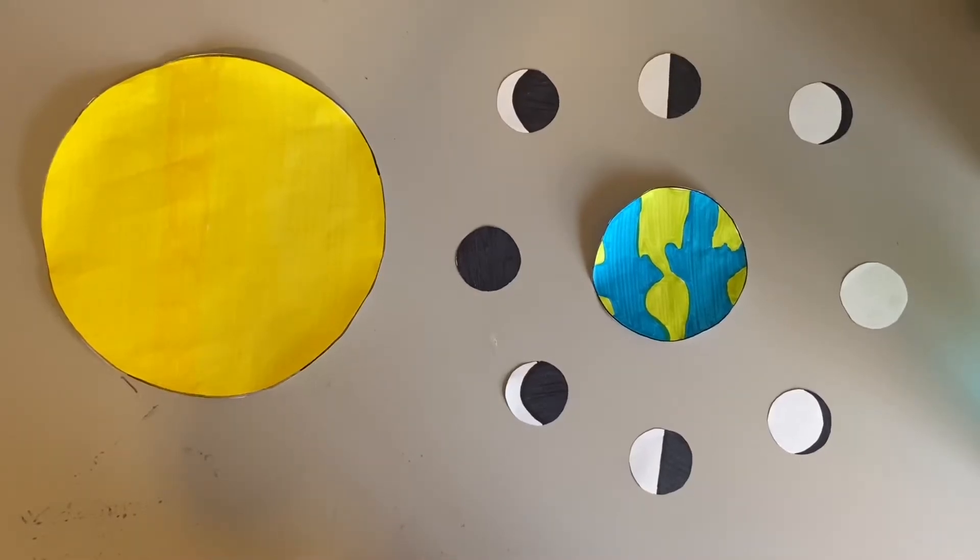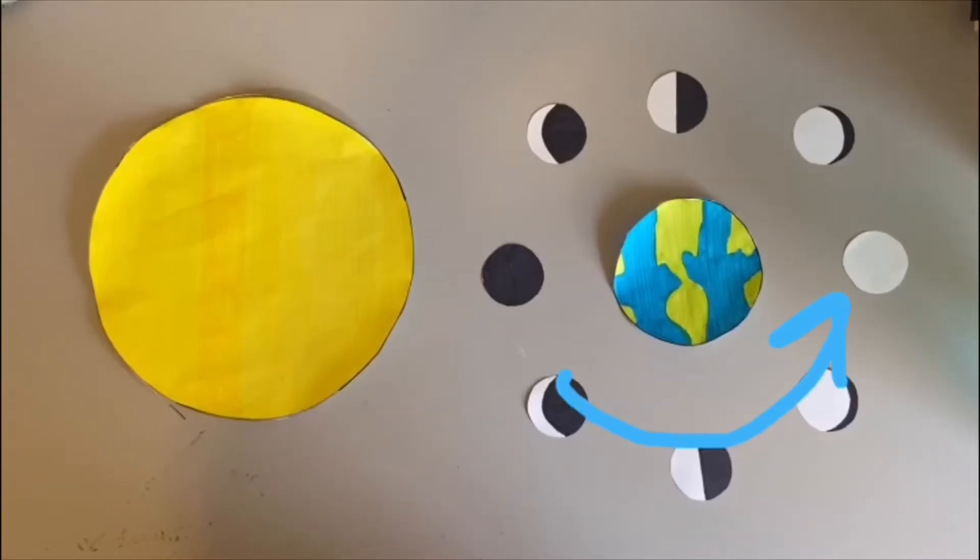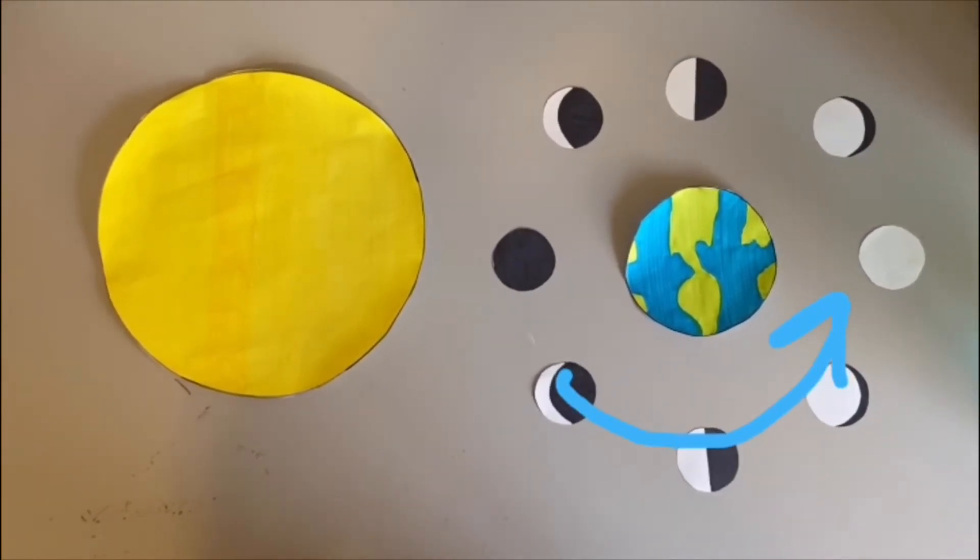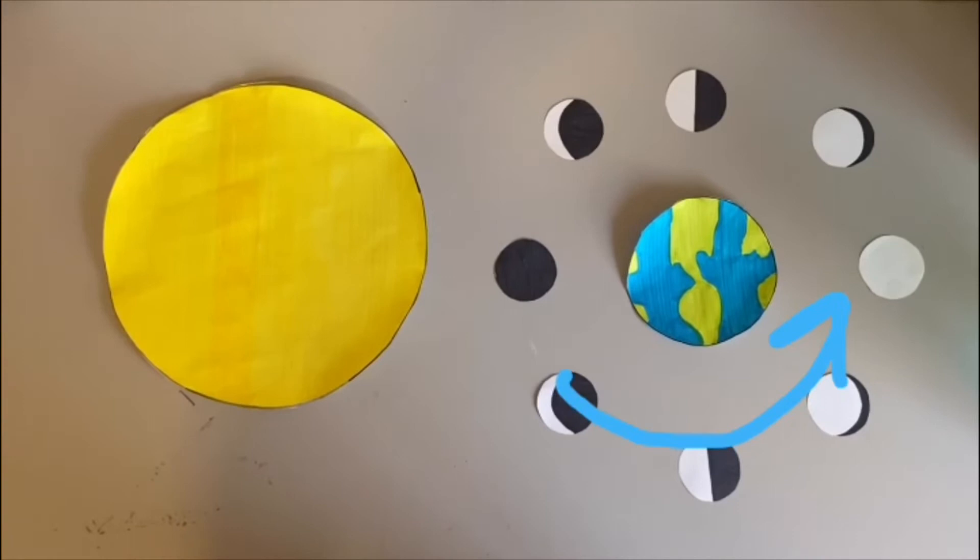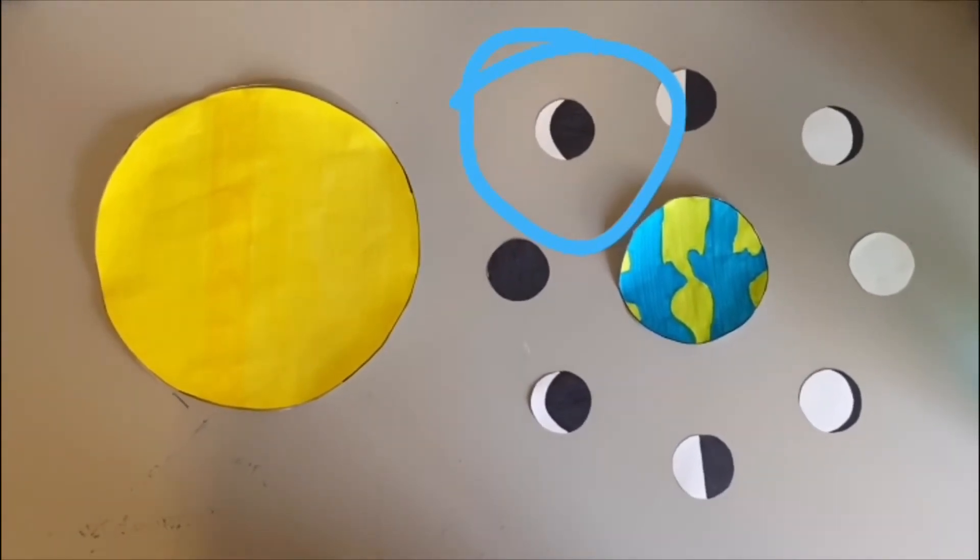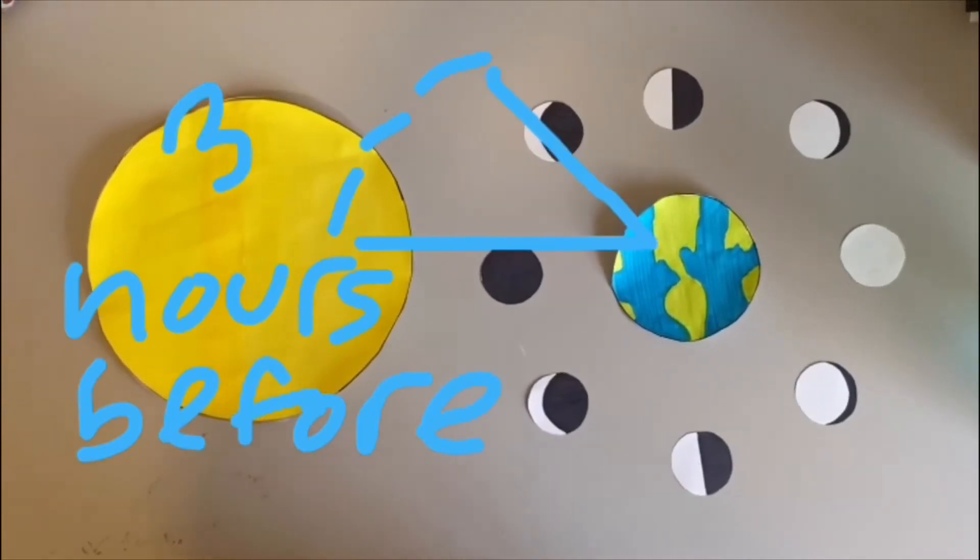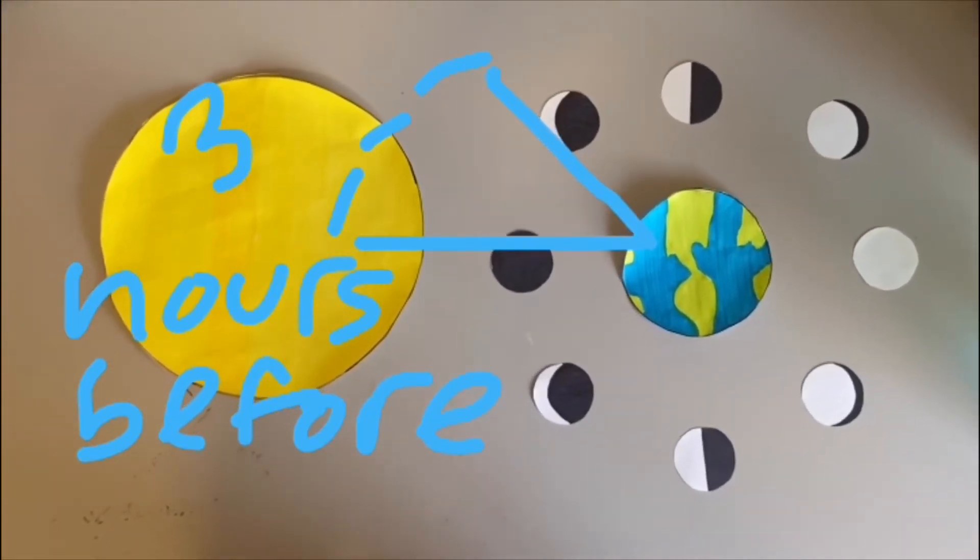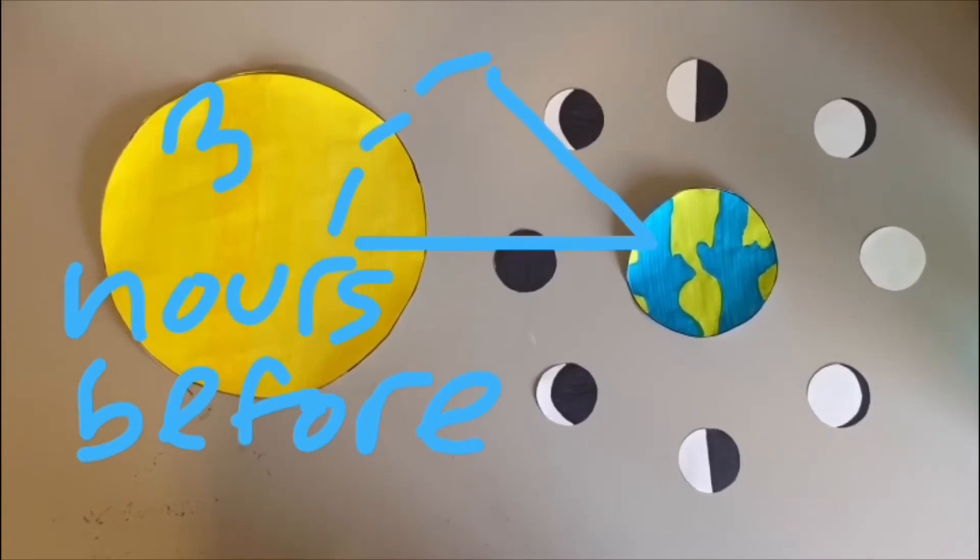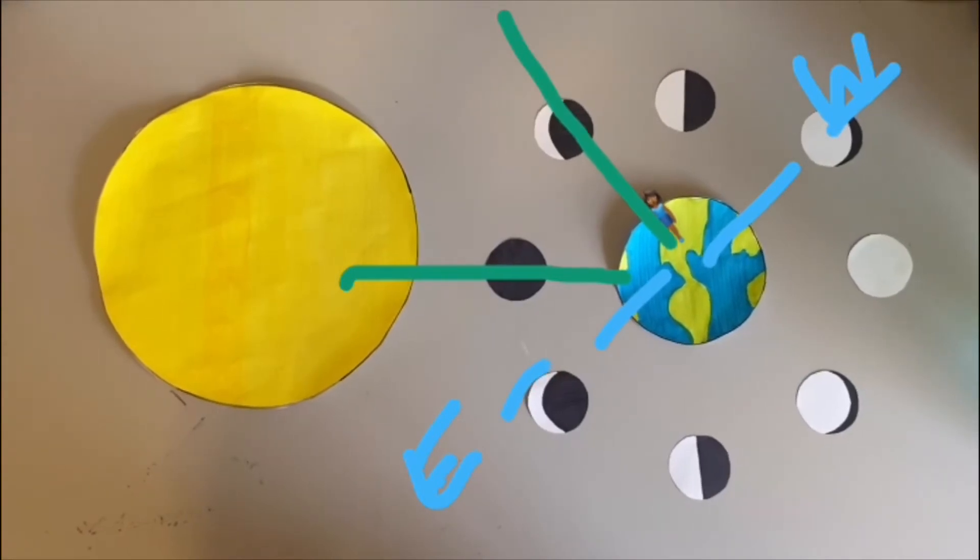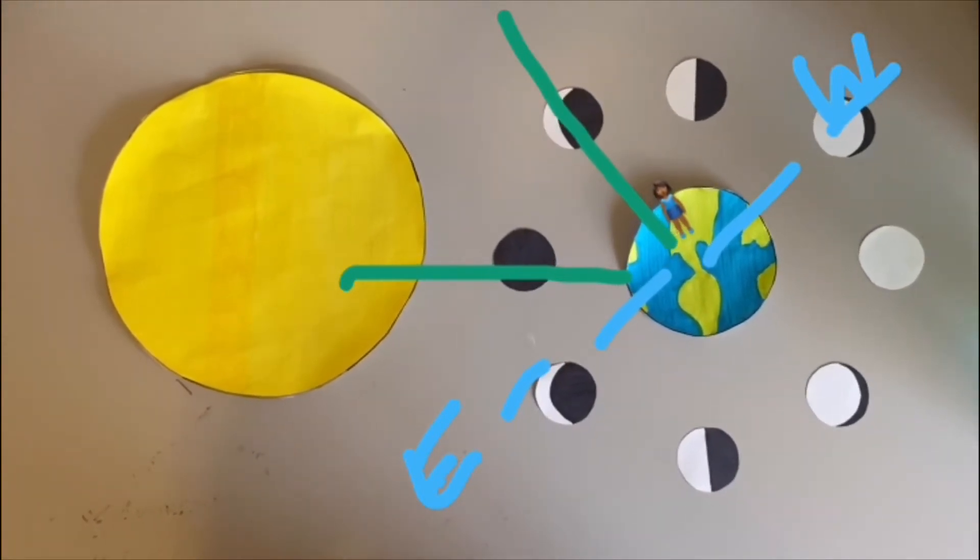Since we know that the Earth orbits counterclockwise, we need to find the moon phase that's right before the new moon. The moon phase that will appear three hours before the sun will be the waning crescent. You can see that the waning crescent in this diagram is at a 45-degree angle from Earth to the sun. So if I'm standing at the exact same spot and looking directly up in the sky, that means the waning crescent moon will appear three hours before the sun.